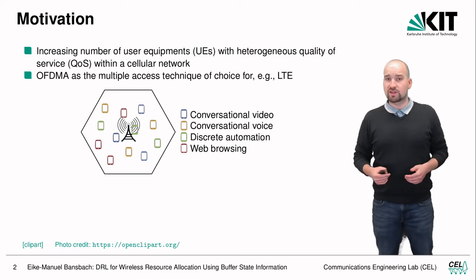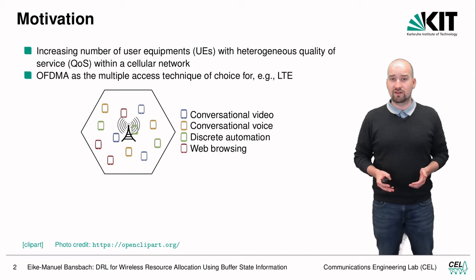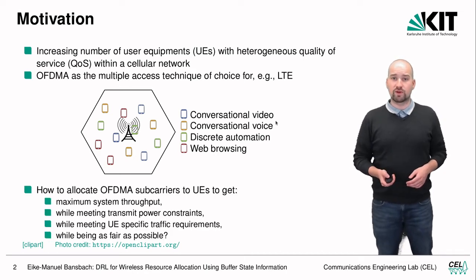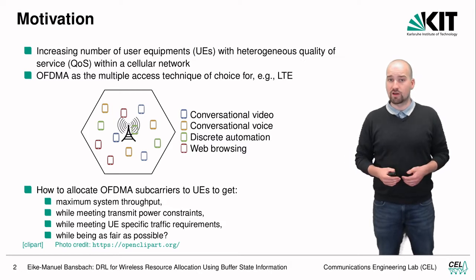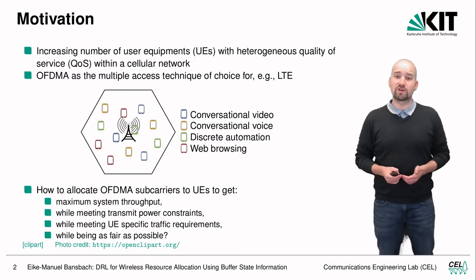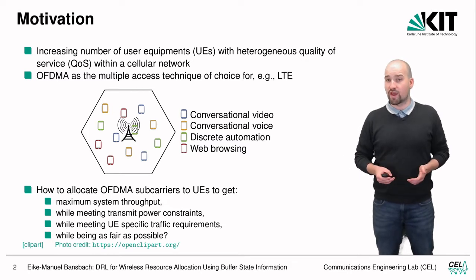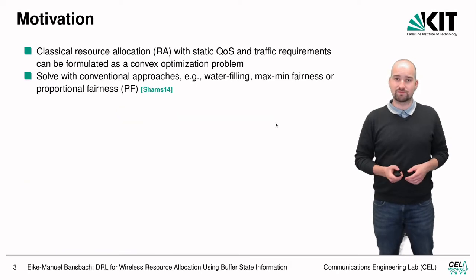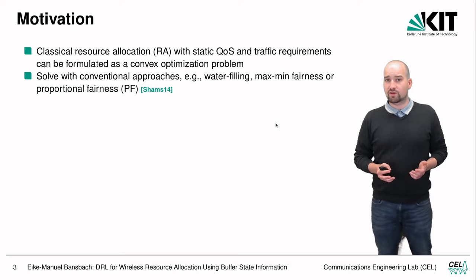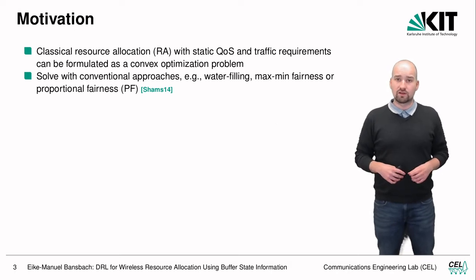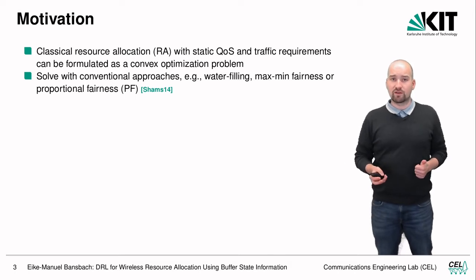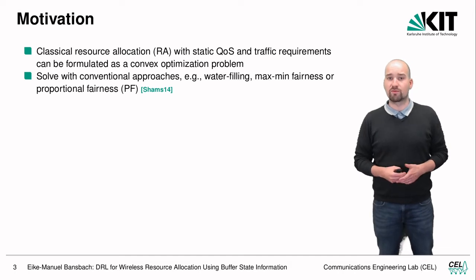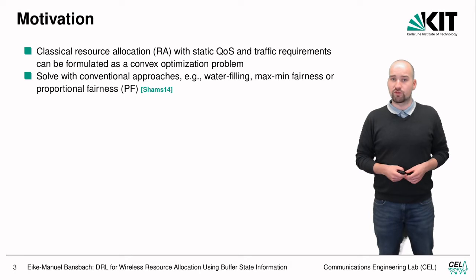In recent years, for LTE for example, OFDMA has shown to be the technique of choice for multiple access schemes. The question for OFDMA is how to allocate sub-carriers to user equipments to get maximum system throughput while meeting transmit power constraints, meeting user equipment specific traffic requirements, and being as fair as possible. The classical resource allocation problem with static QoS can be formulated as a convex optimization problem, solved using water filling, maximum fairness, or proportional fairness.